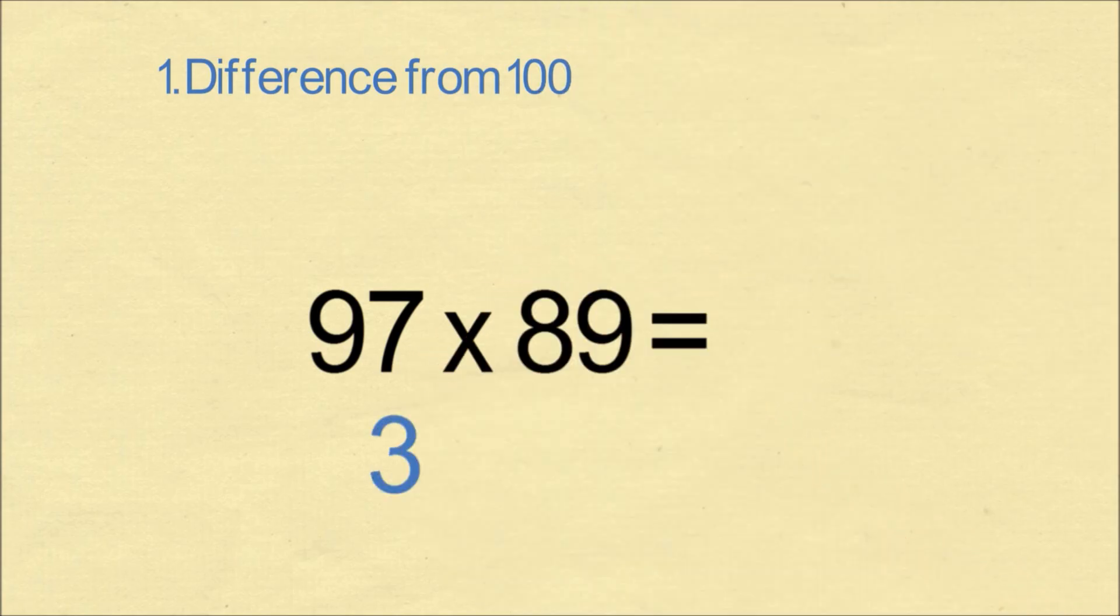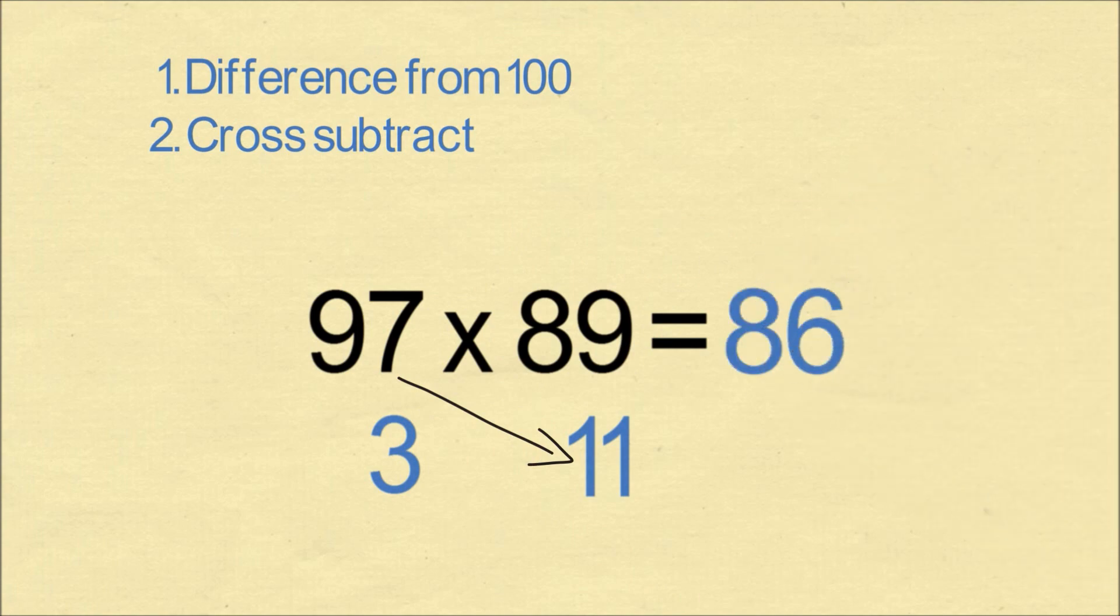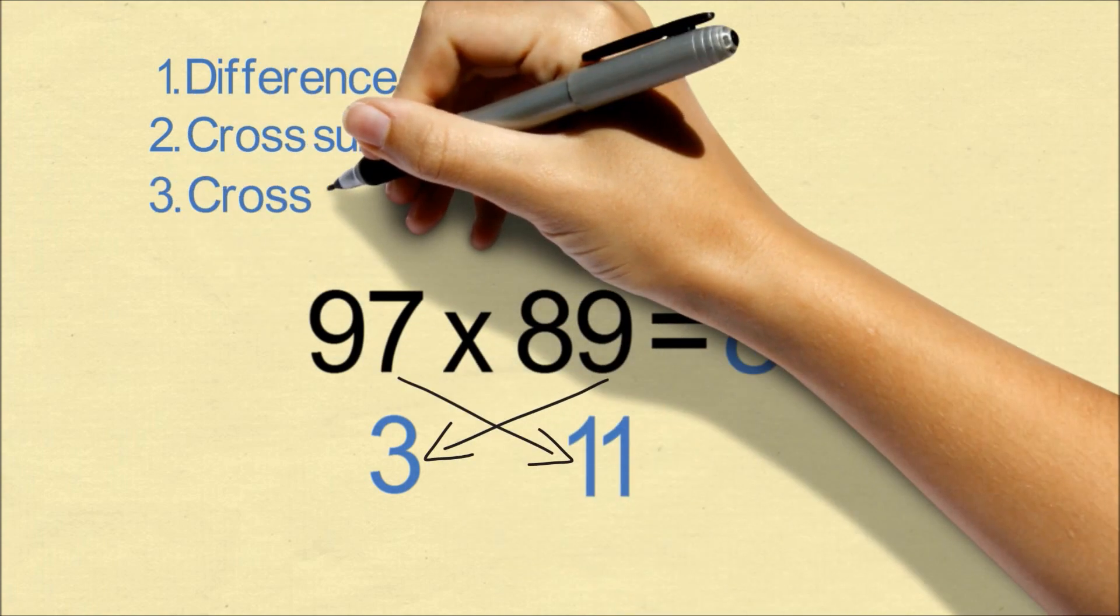We can also do this for numbers that are in the 80s. It's exactly the same steps. We take the difference from 100, we cross subtract, and then finally we cross multiply.